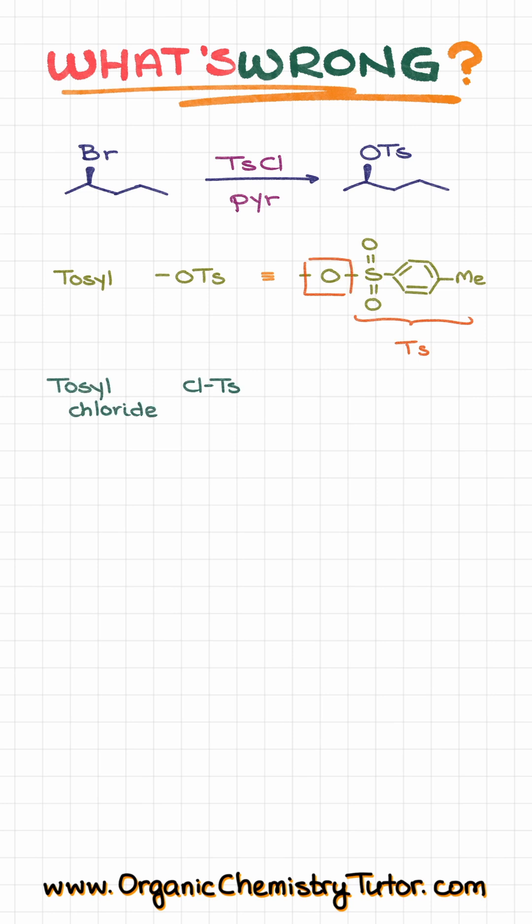Tosyl chloride, TSCL, is this structure, where this portion of the molecule is our tosyl, and the chlorine is the chlorine.